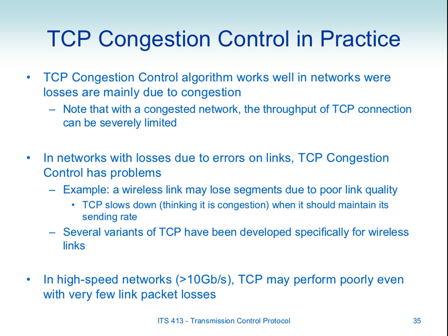In general, the algorithm is considered to work well in most networks because in the Internet, in most cases, a packet loss is due to congestion. However, in some networks — especially wireless networks — packet losses are due to link errors, such as interference on the wireless link from your mobile phone to the base station. A packet may be dropped due to poor link quality, not due to congestion at routers.